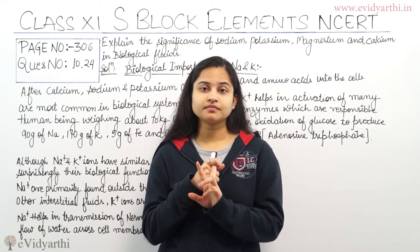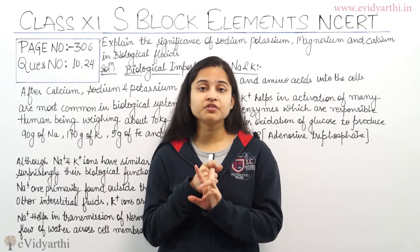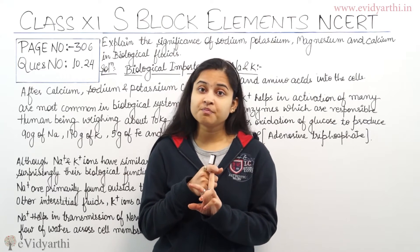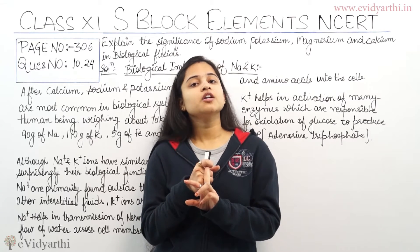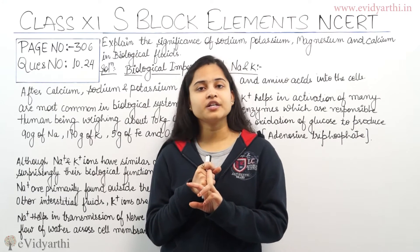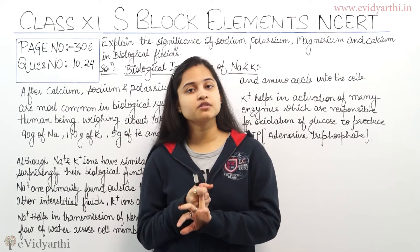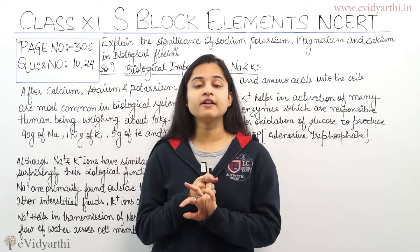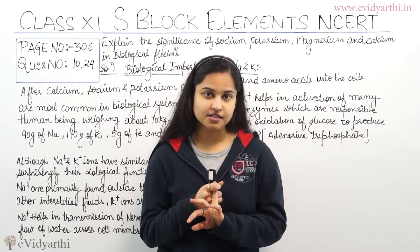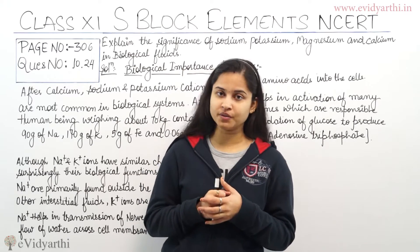The second significance is that potassium ions help in oxidation of glucose to produce ATP, which is adenosine triphosphate. Third, they are also helpful in transmission of nerve signals. So these are the three significances of potassium ions in biological fluids.